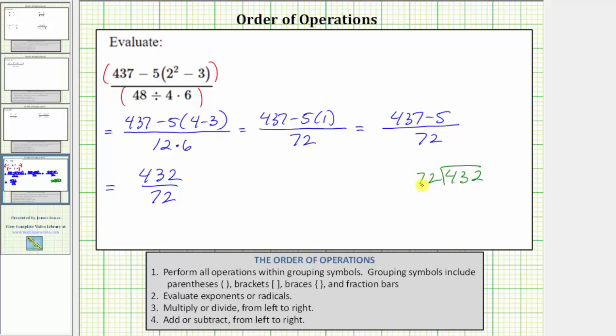I believe there are six 72s in 432. Let's go ahead and check this. Six times two is 12. Perform an exchange. Six times seven is 42 plus one is 43. Notice how six times 72 is exactly 432. We have a remainder of zero, which means it simplifies nicely to six.